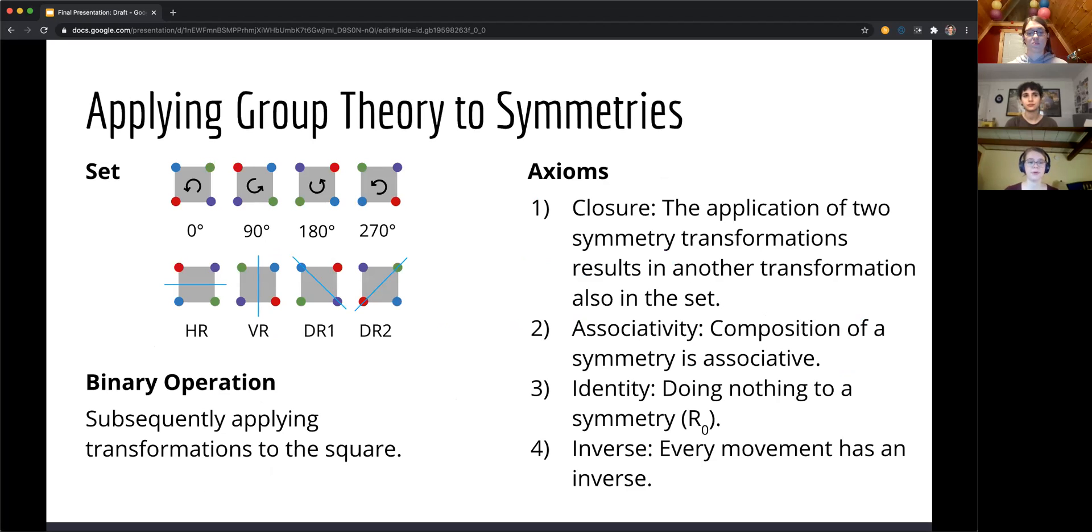So delving a bit deeper into what makes these symmetries a group, we can look at the dihedral group four for a square. The set in this is not the square itself, but the operations that you can perform that preserve symmetry. And then the binary operation in this group is subsequently applying these transformations, such as first rotating by 90 degrees and then performing a vertical reflection. We can see that these axioms hold for this group. In closure, the application of two symmetry transformations results in another transformation, such as a rotation by 90 degrees followed by a rotation by 180 degrees gives you a rotation by 270 degrees.